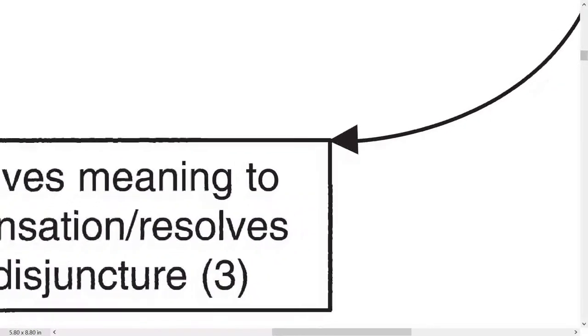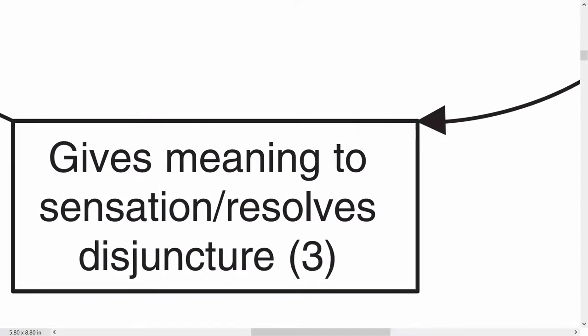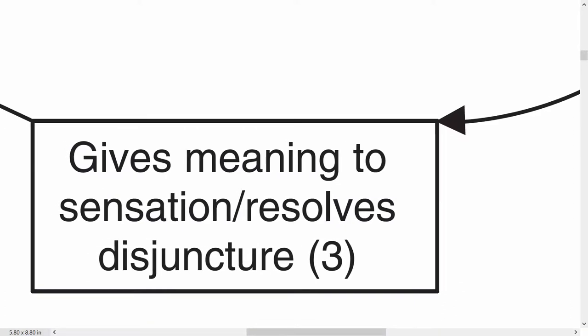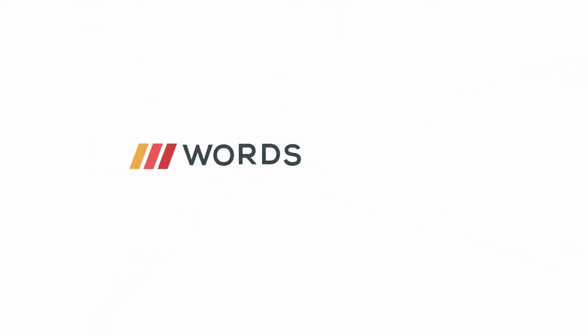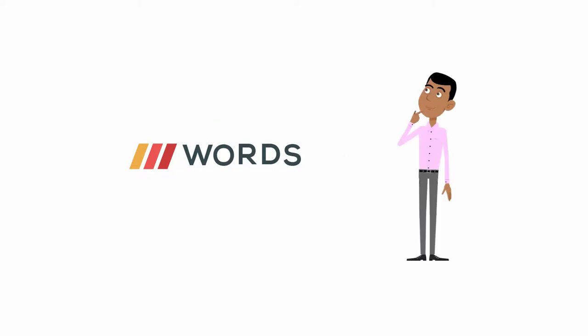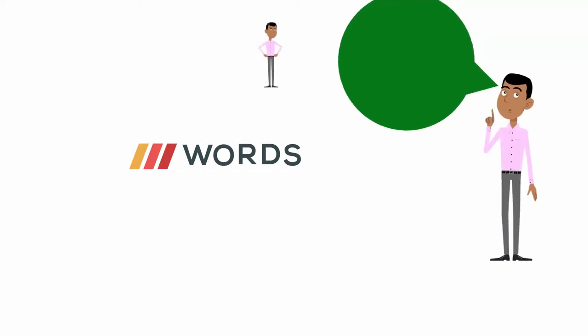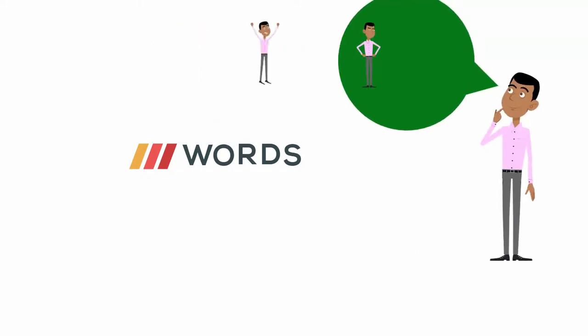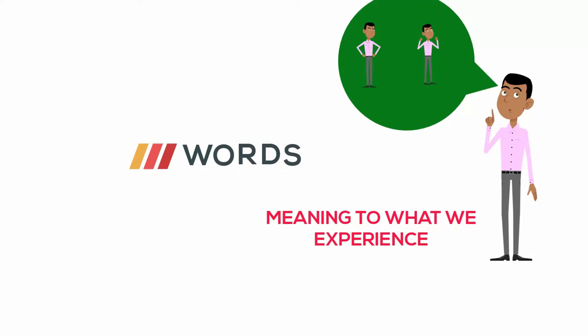The next step in the learning process is that we transform these sensations into the language of our brain. We find or develop words for what we experience — in other words, we assign a meaning to what we experience.